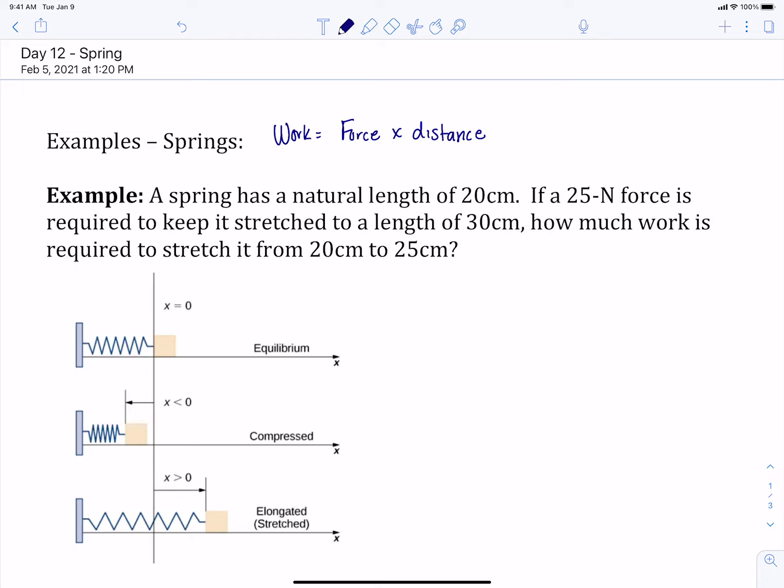Another example of when we're doing work is if we have a spring and we want to compress it from its natural length. What we do with the spring is we set it up on an axis, and its natural length that that spring wants to sit at, that's going to be our zero.